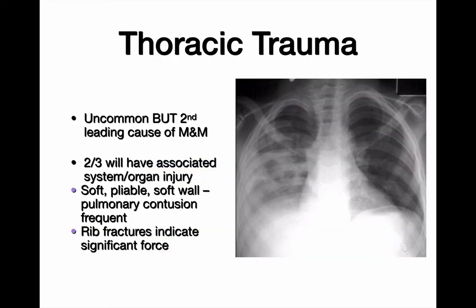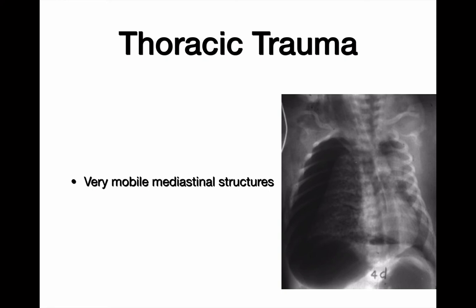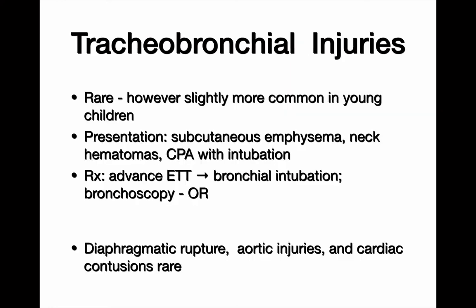Thoracic trauma is the second leading cause of death after the brain. Most of the time it's associated with solid organ injury — about 40–60% of the time. You're more likely to have pulmonary contusions. If you have rib fractures, look for aortic injuries and tension pneumothorax. The chest is so pliable you might not see it until very late — the pneumothorax may be three times the size of the contralateral lung on x-ray before it's noticed. If you're thinking about putting in a chest tube, just do it.